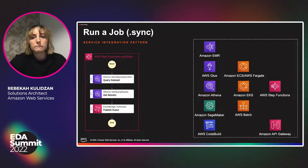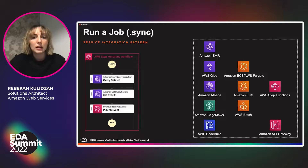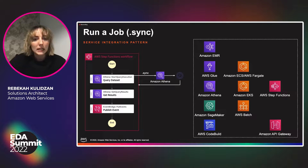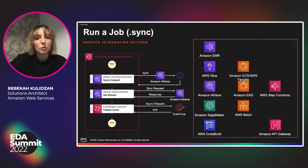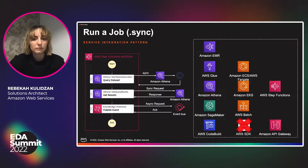Finally, run a job: Step Functions runs a set of event-driven mechanisms to run async jobs. Here we're integrating with Amazon Athena to get results and publish our event. We start with a synchronous request to kick off a query job with Athena. Step Functions monitors this and when complete, sends results back for the next step, collecting results to get the data you need. Once done, it sends an asynchronous request to EventBridge to conclude, much like the first pattern. This is supported under optimized integrations.